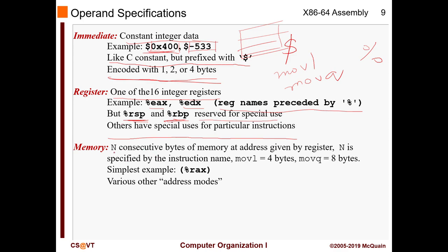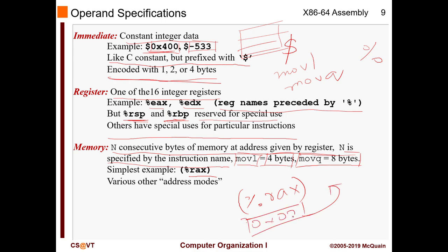You can also use a memory address — N consecutive bytes of memory at the address stored in a register, where N is specified by the instruction: MOVL gives four bytes and MOVQ gives eight bytes. The syntax uses parentheses around the register, like (%rcx). It goes to that register, reads the address stored there, then fetches data from that memory location. It's essentially like a pointer.